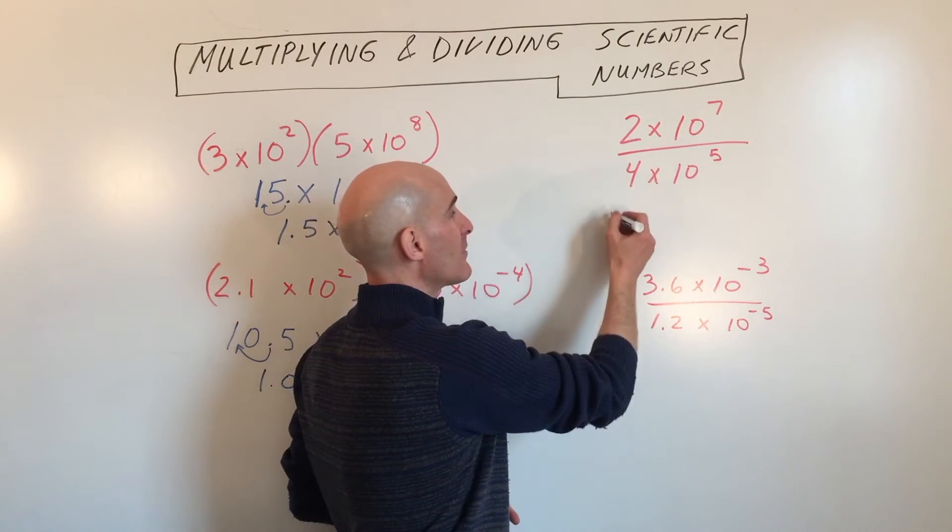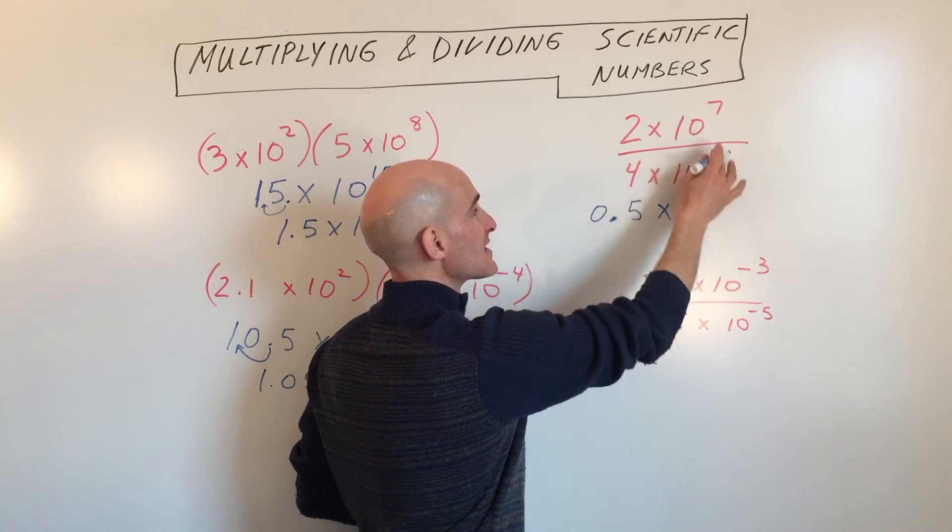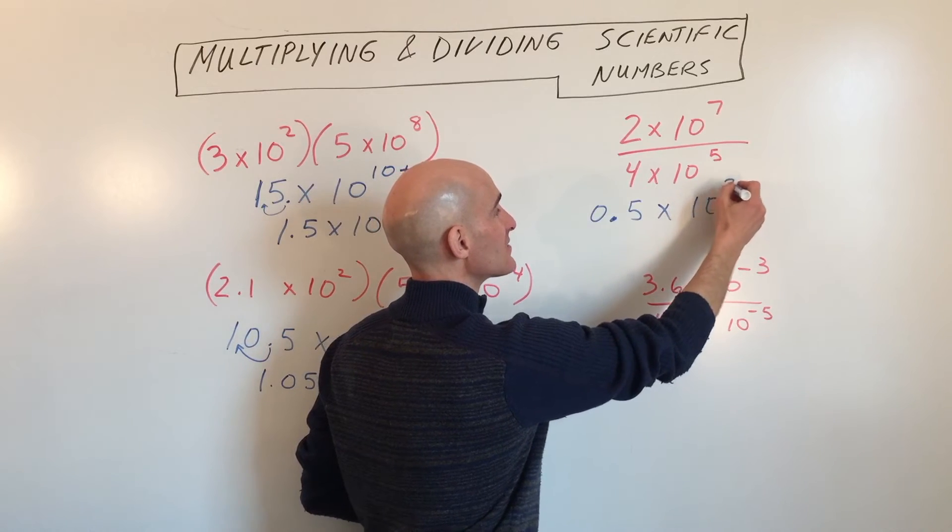So let's do that. So 2 divided by 4 is 0.5 times 7 minus 5 gives us 10 to the second.